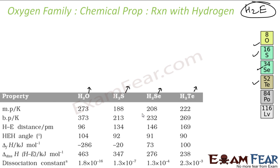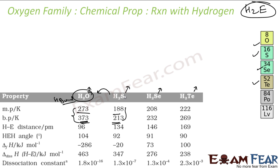If you see the melting points and boiling points, water is a special case. The boiling point of water is more than the boiling point of hydrogen sulfide — this is because of hydrogen bonding in water and no hydrogen bond in H₂S. Oxygen is highly electronegative and attracts electrons towards itself, making hydrogen slightly positive and oxygen slightly negative, forming hydrogen bonds. Sulfur is not that electronegative, so hydrogen bonding is almost absent.